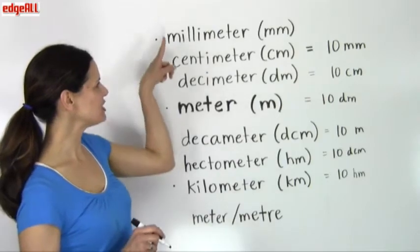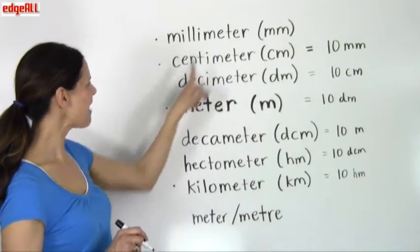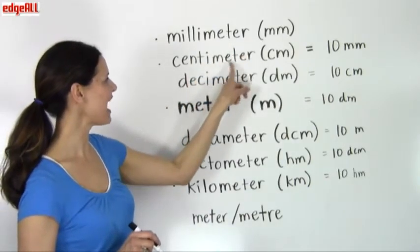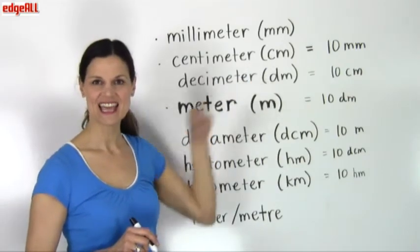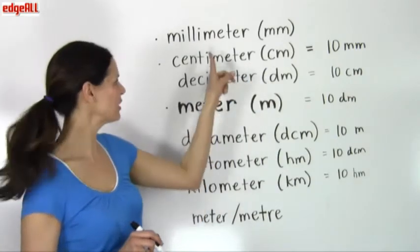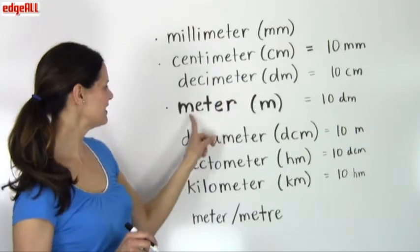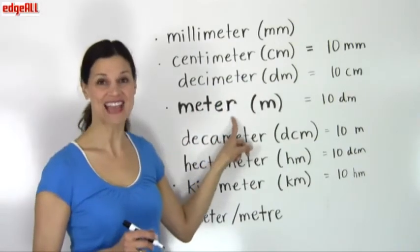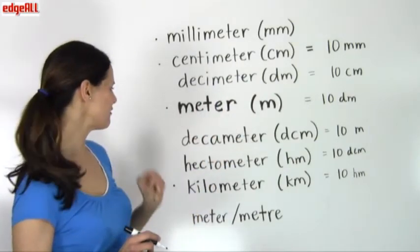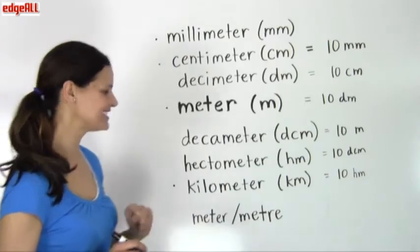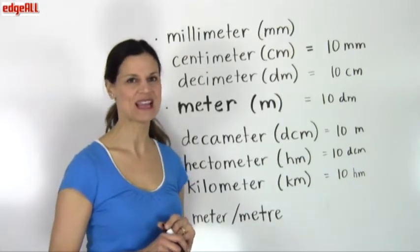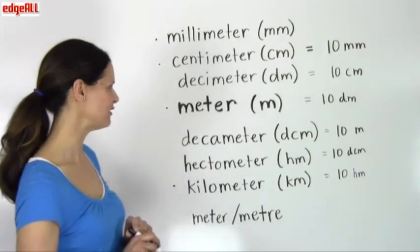All units used to measure the length have the word meter as their suffix. They all end with the word meter. This one, meter, just has the word meter in it with nothing before it, but all of them contain the word meter. It's the base unit of measurement for length.